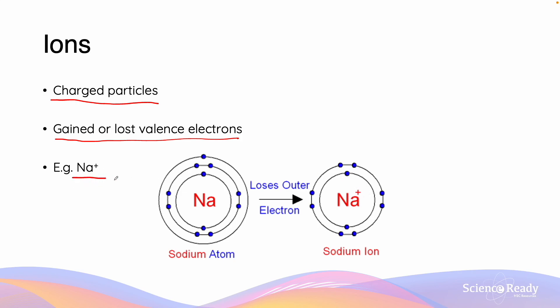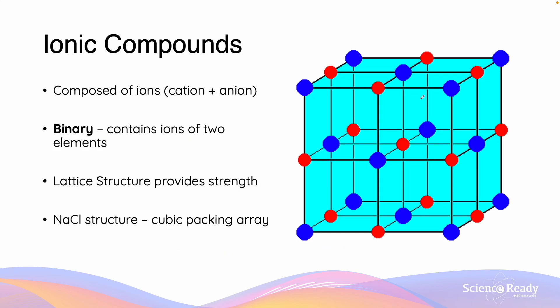Ionic compounds are compounds which are composed of ions - ions being the cation, which is positive, and the anion, which is negative. We can describe an ionic compound as being binary if it contains ions of two elements. Something like NaCl or even CaCl2 are examples of binary ionic compounds.